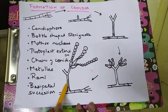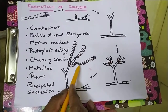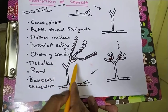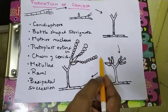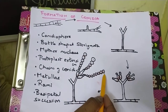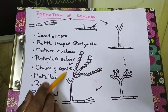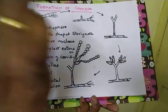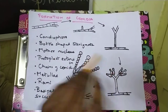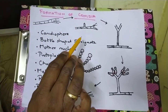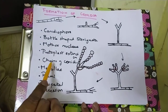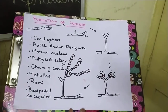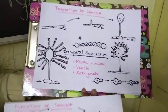This concept is called basipetal succession — the oldest conidia are found at the tip and the youngest conidia are at the base. The overall structure is called conidiomata: in Rhizopus it is called sporangium, here it is called conidiomata, and it gives rise to sterigmata. Key terms for examination: sterigmata, mother nucleus, protoplast extension, chains of conidia, and basipetal succession.